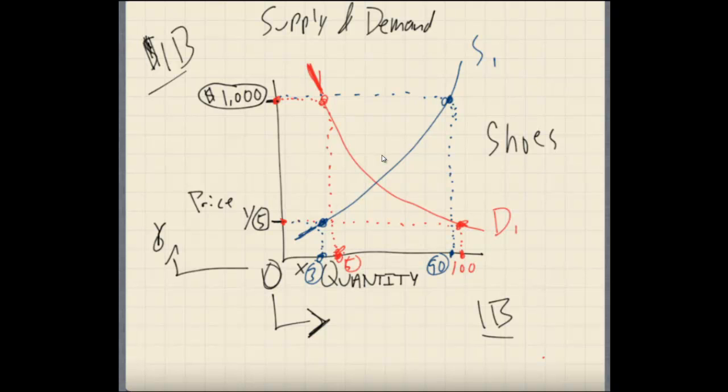So that kind of gives us an idea of the difference in the attitudes of the suppliers and the attitudes of the buyers, the people who want to buy shoes, the people who make shoes, the people who demand, the buyers, the consumers who want shoes. Now let's do this next part in purple here.